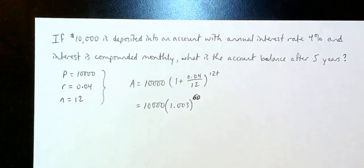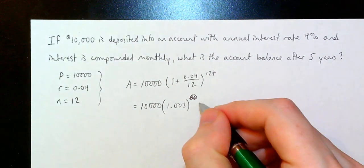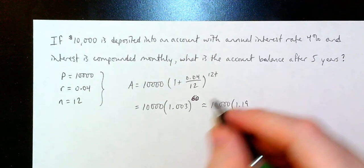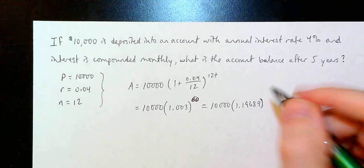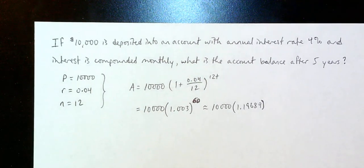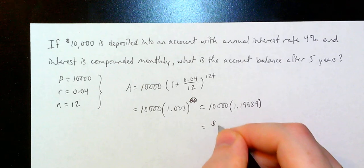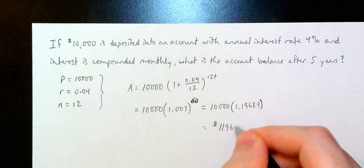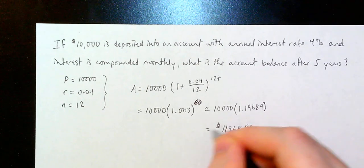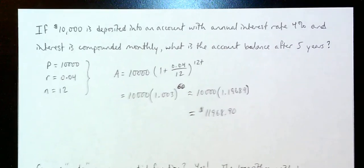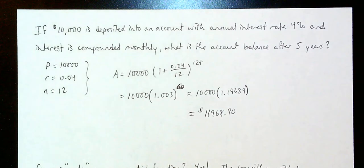If I take 1.003 raised to the power of 60, I get approximately 1.19689. Multiplying by 10,000, I get $11,968.90. That's what our account balance is going to be after 5 years, assuming that we don't take any money out and we don't add in any other money into this savings account.